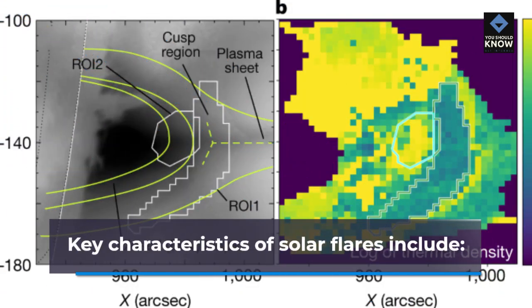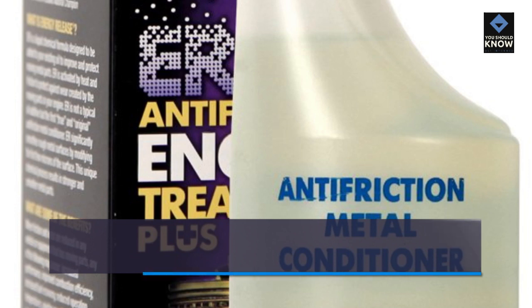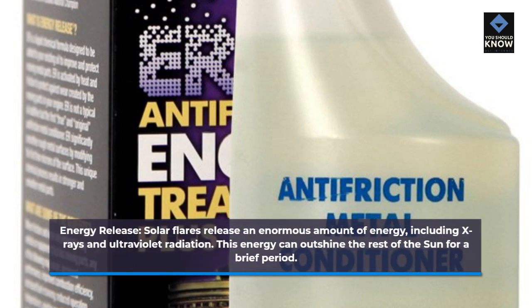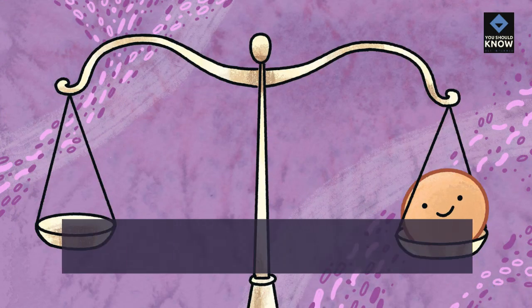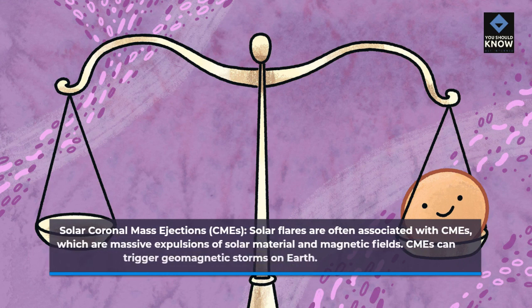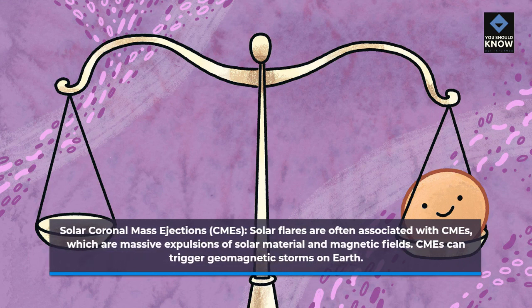Key characteristics of solar flares include energy release: solar flares release an enormous amount of energy, including X-rays and ultraviolet radiation, which can outshine the rest of the Sun for a brief period. Solar flares are also often associated with coronal mass ejections, or CMEs, which are massive expulsions of solar material and magnetic fields.